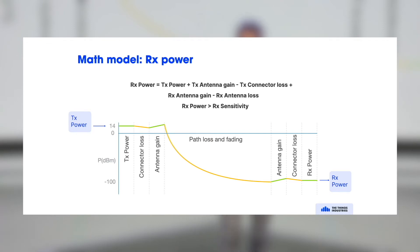And then on the receiver end you have also an antenna gain and some antenna loss. And then the goal is obviously that the resulting RX power is higher than the receiver sensitivity. If it's below the receiver sensitivity, then your message gets lost in space. So this is what you don't want.